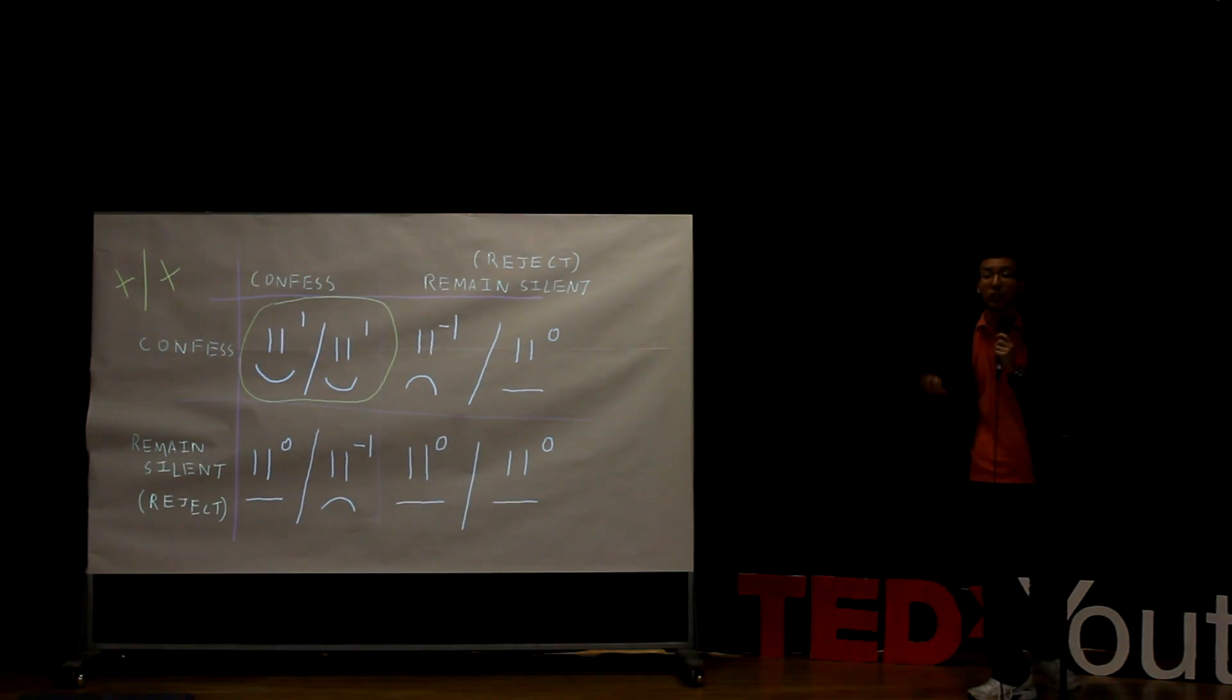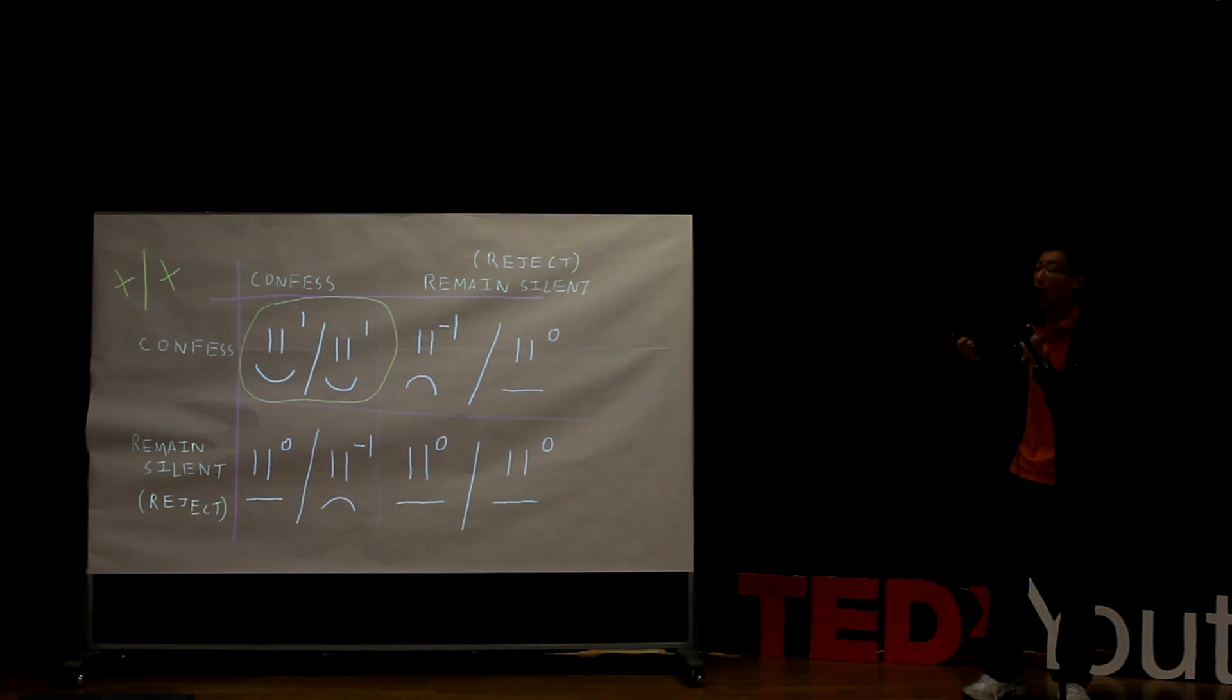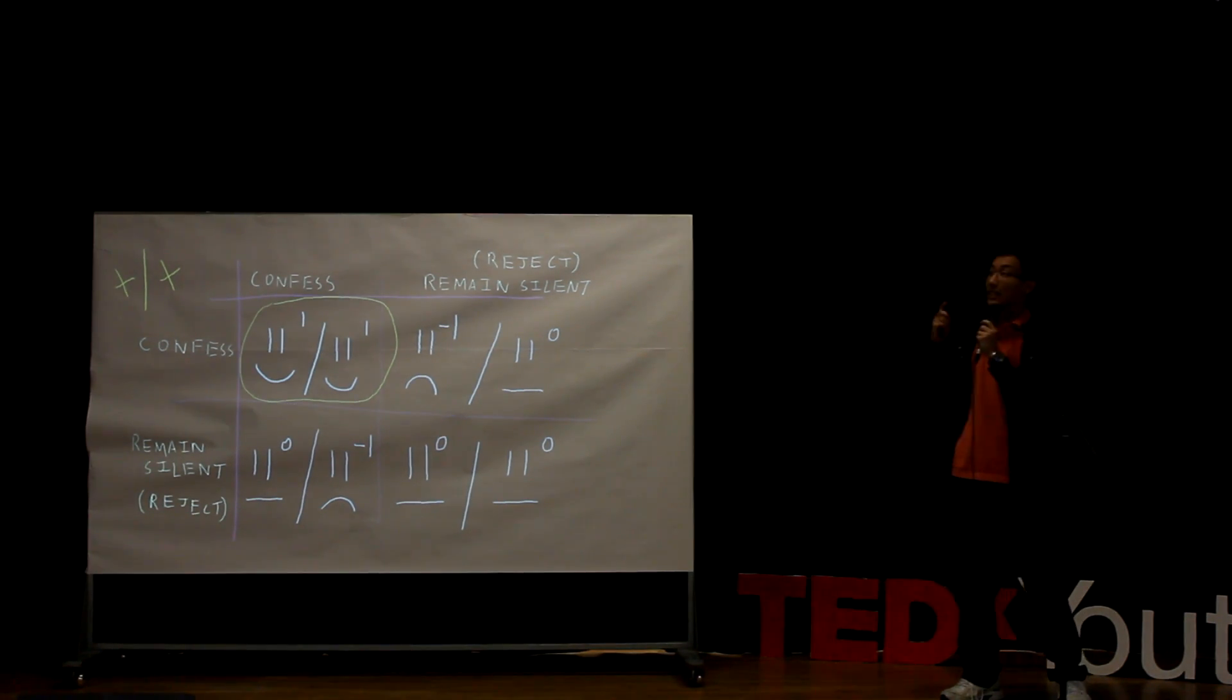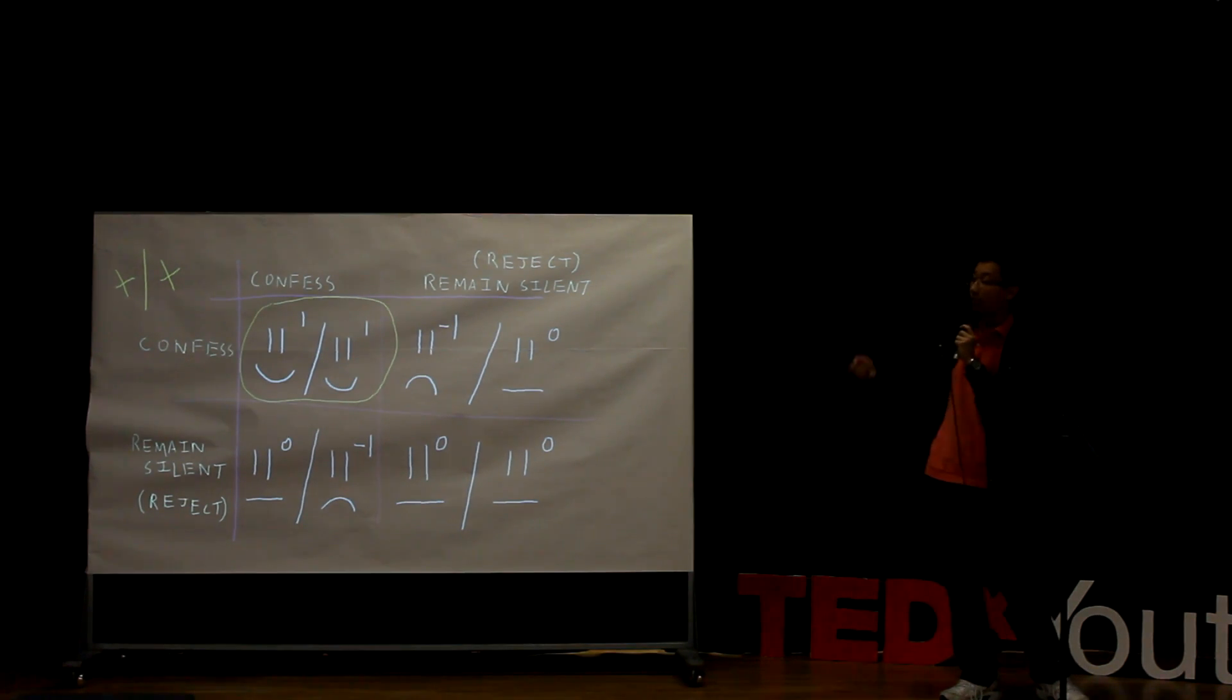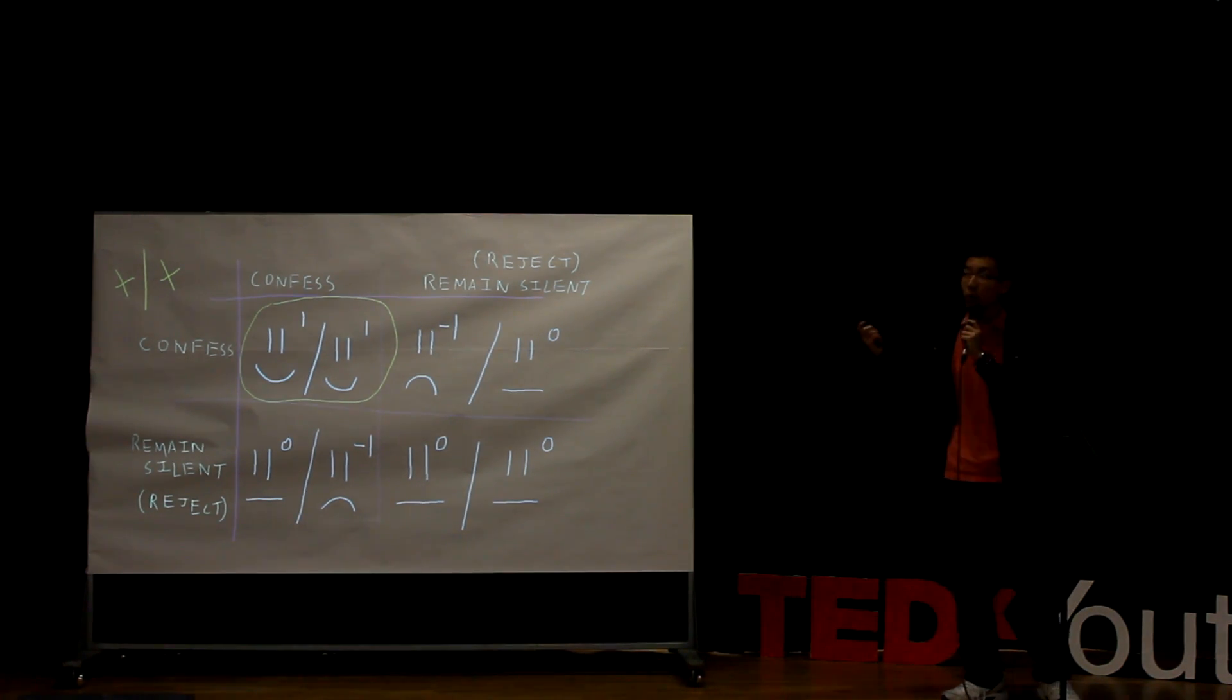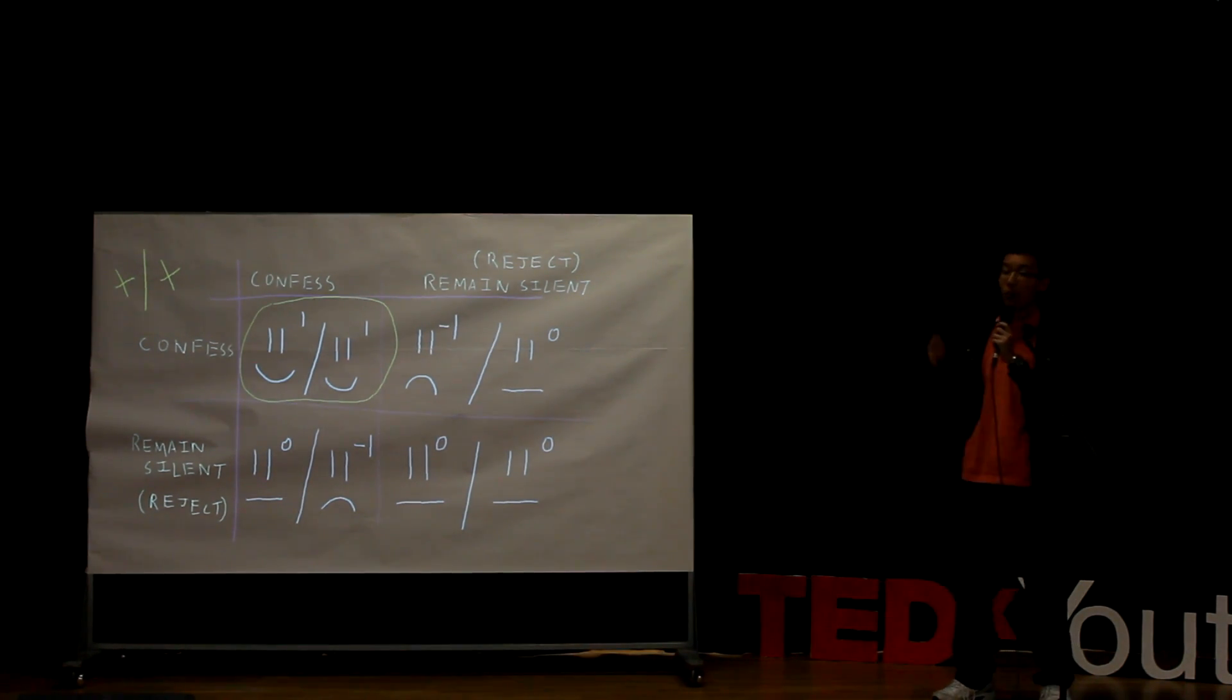However, you can see that the dominant strategy is not always the best possible strategy that a scenario can offer. In this scenario, in the decision matrix, people can see that the best, the true best possible outcome would be if both people had confessed, resulting in two positive outcomes for both people.